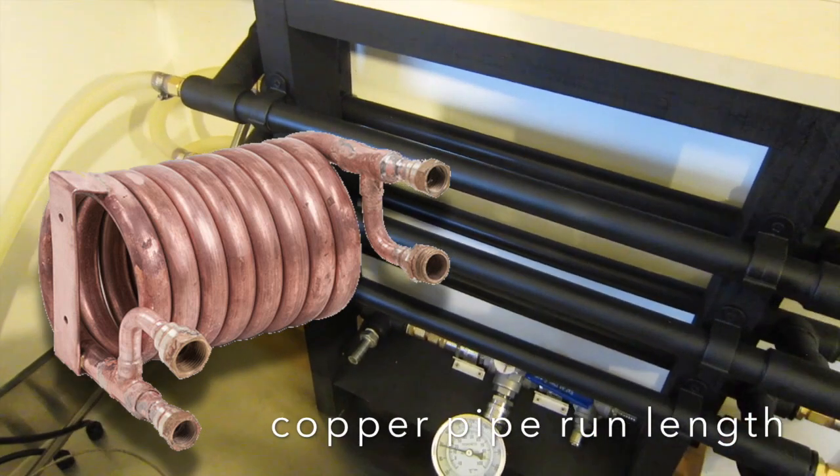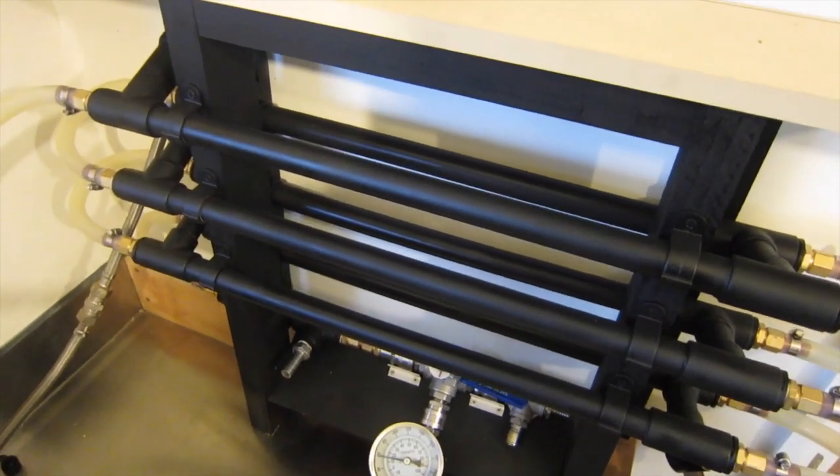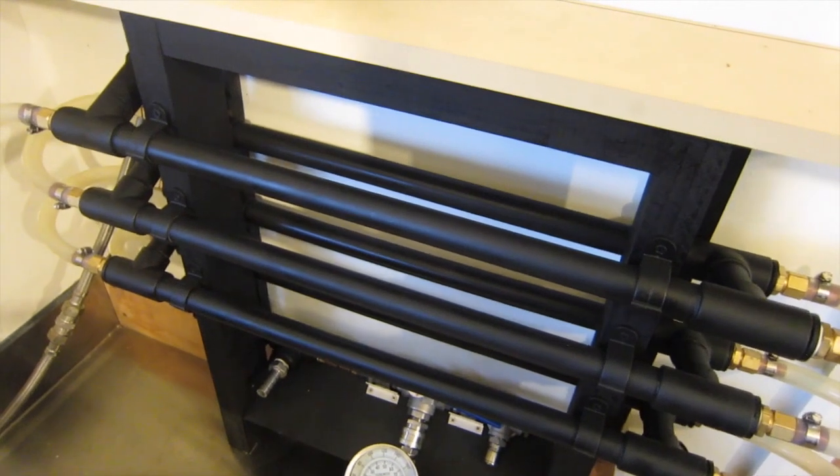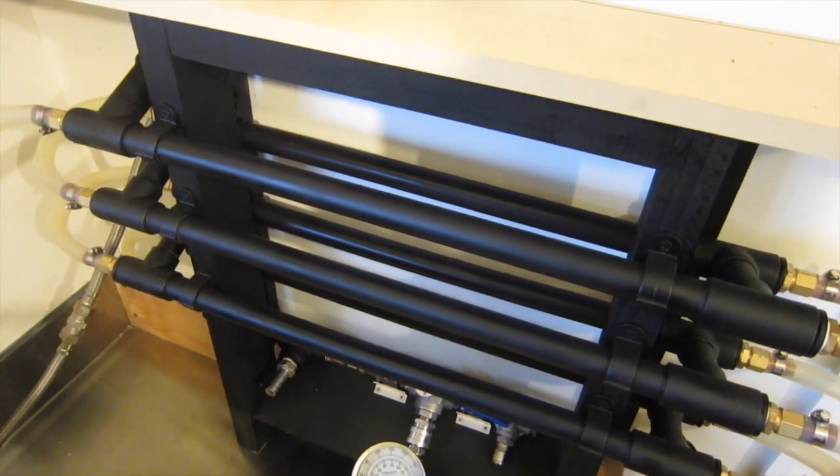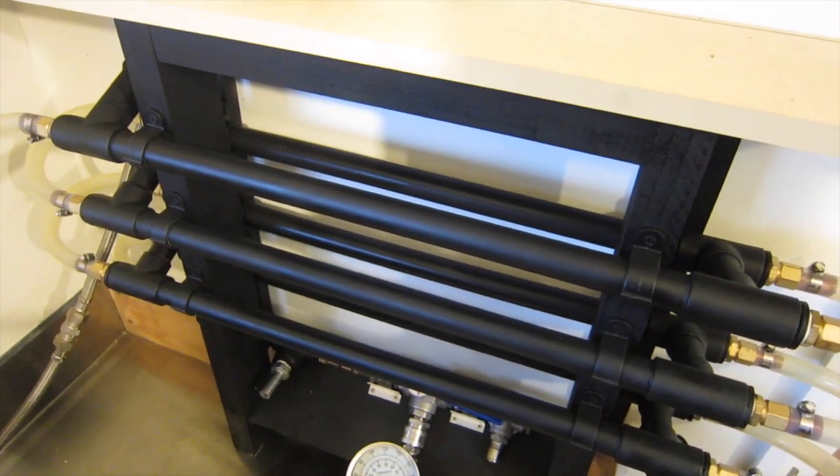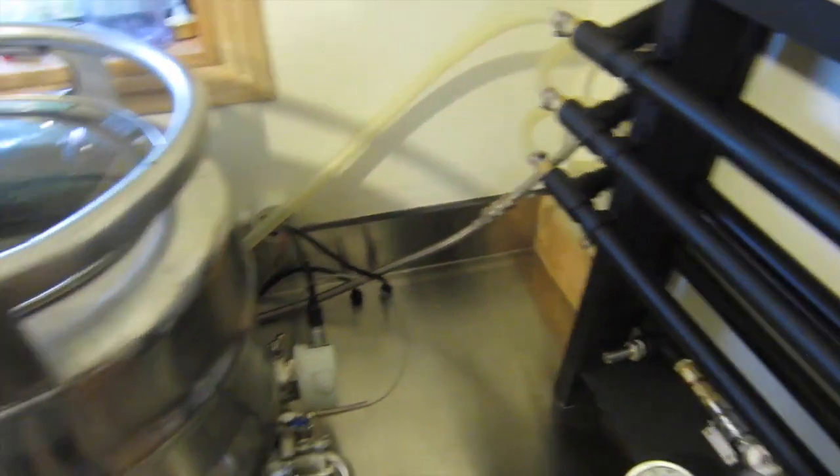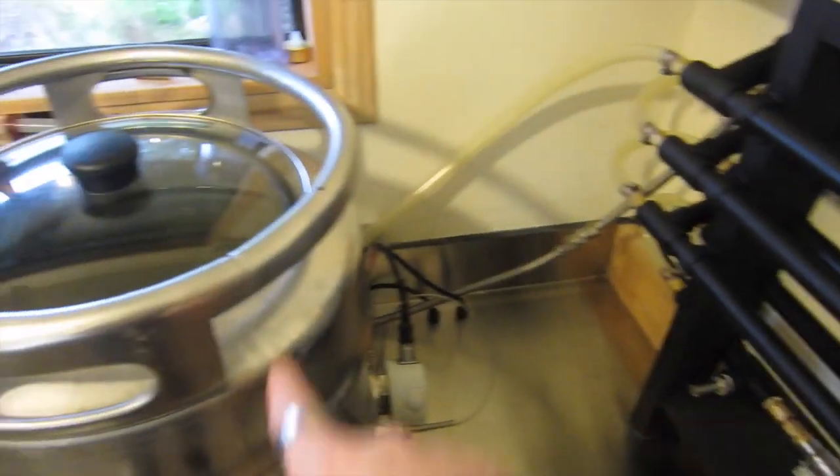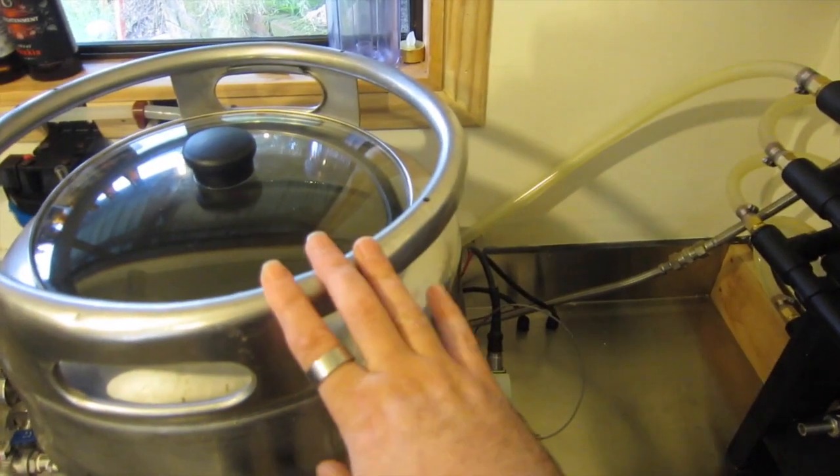That's adequate to bring the volume of wort down to pitching temperature. It took me 20 minutes to bring boiling wort down to 26 degrees, pretty close to my pitching temperature. That involved recirculating back into the kettle and just kept pumping out and recirculating it through until my core volume of the kettle was down to that pitching temperature.